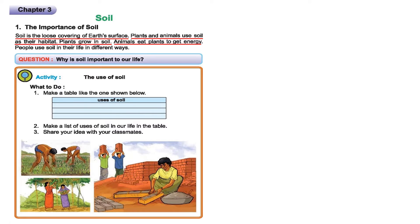We know that plants grow normally in the soil, and as human beings and all animals we are dependent on plants to get energy. As human beings we use the soil in different ways in our life and we will learn about them. You can see that in this page I have marked some lines with red color. So make a pause of this video and try to mark those important lines in your textbook, because we have decided to give you some important lines for your matching as well as fill in the blanks.